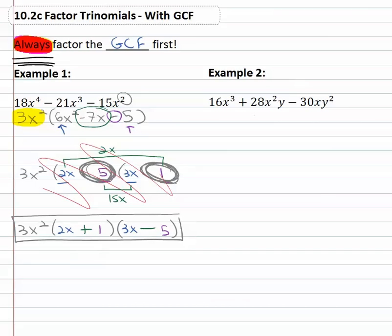Always factor the GCF first. So, when we see example 2 that says 16x^3 + 28x^2y - 30xy, we think GCF first. 16, 28 and 30, they're all divisible by 2. They also all have at least a single x on them.